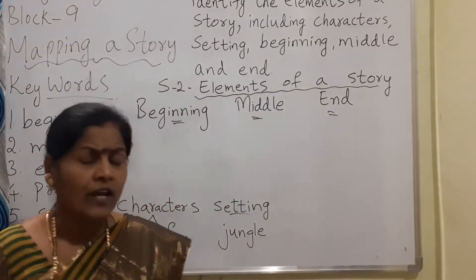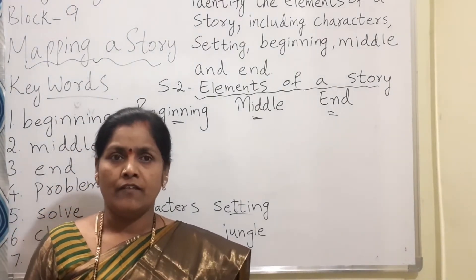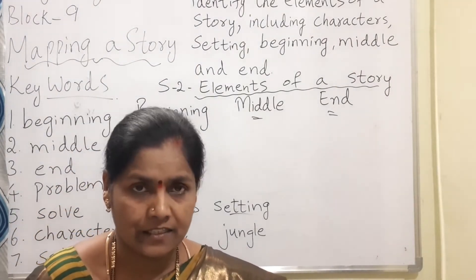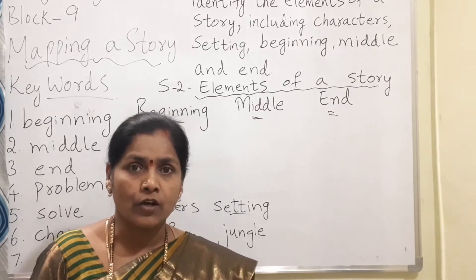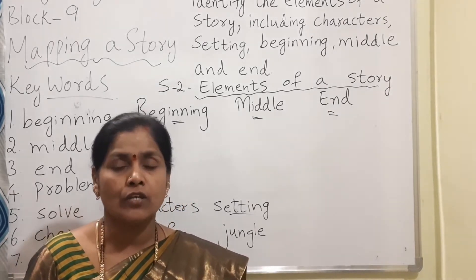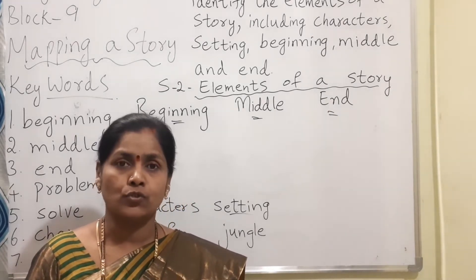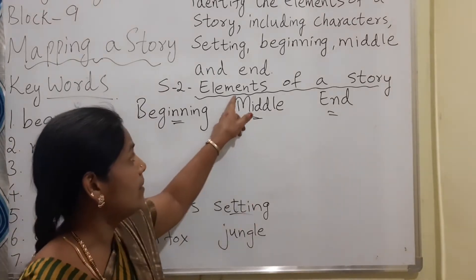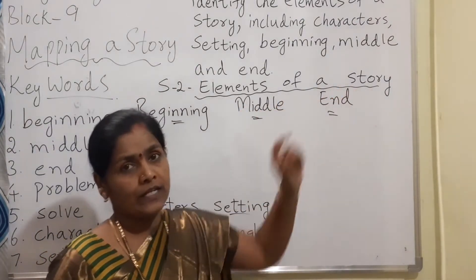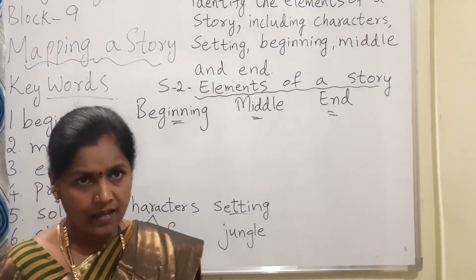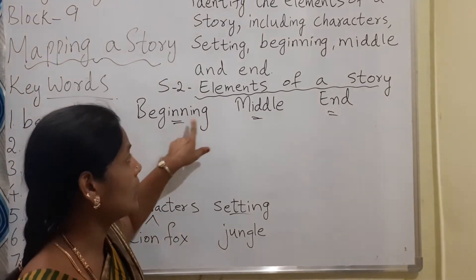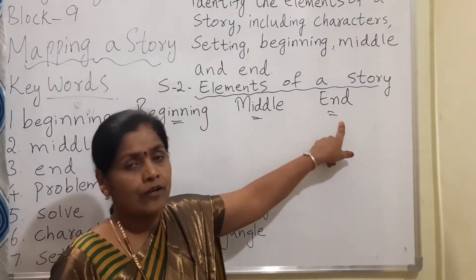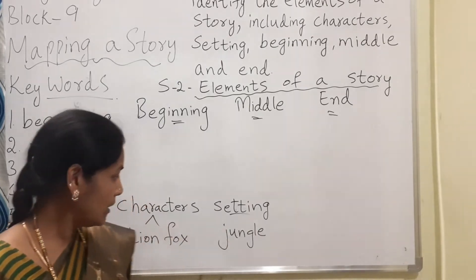For every story, we will have three things. They are called the elements of a story. What are they called? Elements of a story. They are the beginning of the story, the middle of the story, and the end of the story.